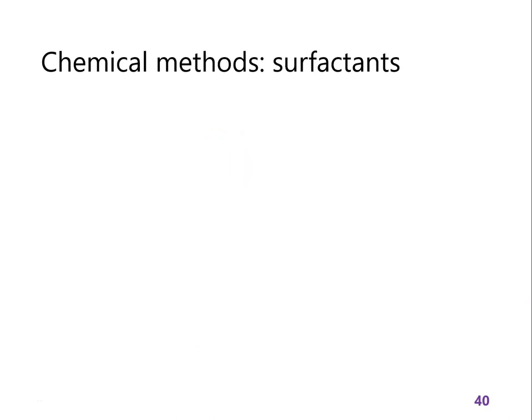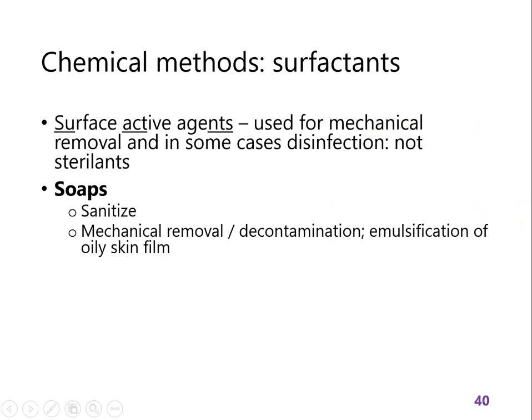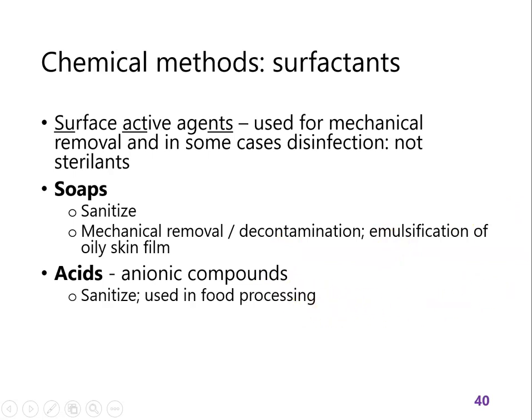Another class of chemicals are surfactants. These aren't as closely related to each other as halogens or alcohols, but what all surfactants do is let oil and water mix — they help dissolve hydrophobic materials in water. They're useful for mechanical removal and decontamination; they can dissolve fats and disrupt membranes in some cases. Most would not work for sterilization because they won't affect endospores, but they're very useful for physically removing microorganisms. That's why we use soap — soaps are good sanitizers and great for decontamination.